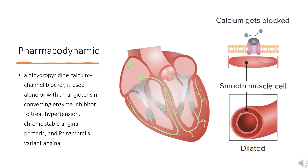Pharmacodynamics: Lercanidipine, a dihydropyridine calcium channel blocker, is used alone or with an angiotensin-converting enzyme inhibitor to treat hypertension, chronic stable angina pectoris, and Prinzmetal's variant angina. Lercanidipine inhibits the influx of extracellular calcium across the myocardial and vascular smooth muscle cell membranes, possibly by deforming the channel, inhibiting ion-control gating mechanisms, and/or interfering with the release of calcium from the sarcoplasmic reticulum. The decrease in intracellular calcium inhibits the contractile processes of the myocardial smooth muscle cells, causing dilation of the coronary and systemic arteries, increased oxygen delivery to the myocardial tissue, decreased total peripheral resistance, decreased systemic blood pressure, and decreased afterload.